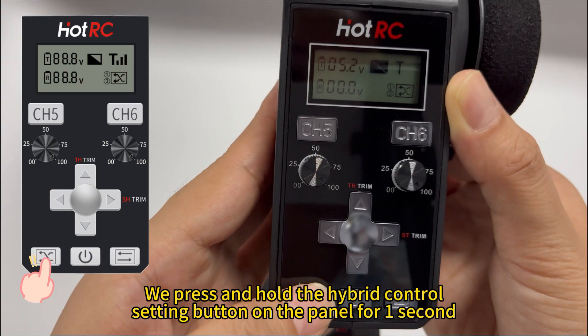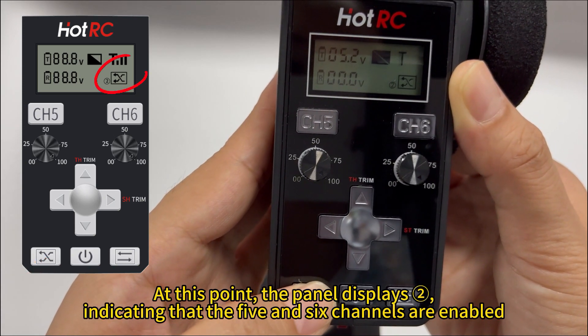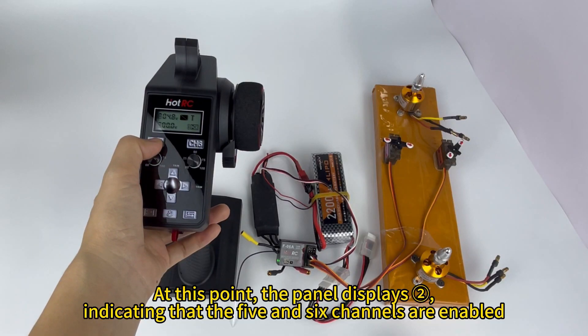We press and hold the hybrid control setting button on the panel for one second. At this point, the panel displays 2, indicating that channels 5 and 6 are enabled.